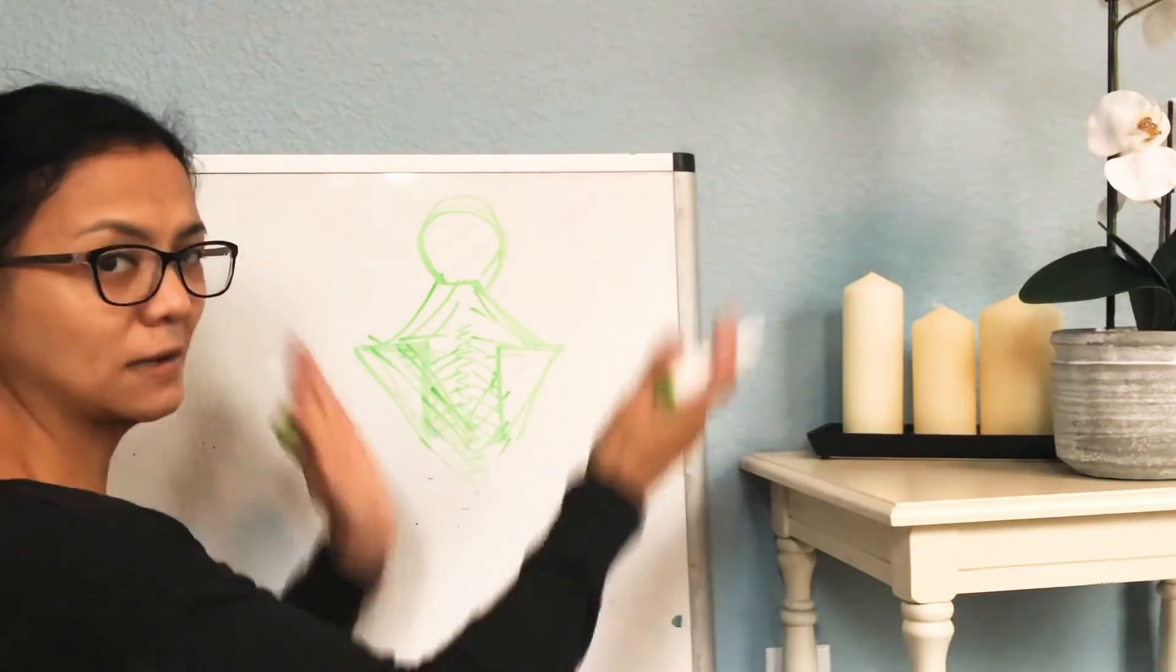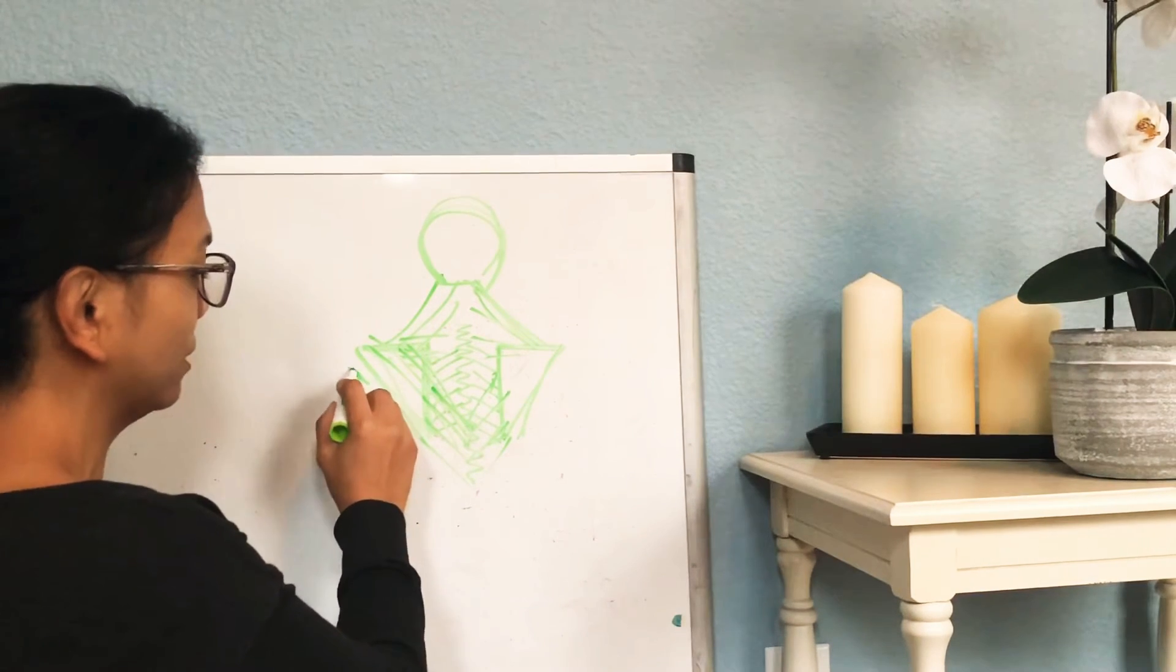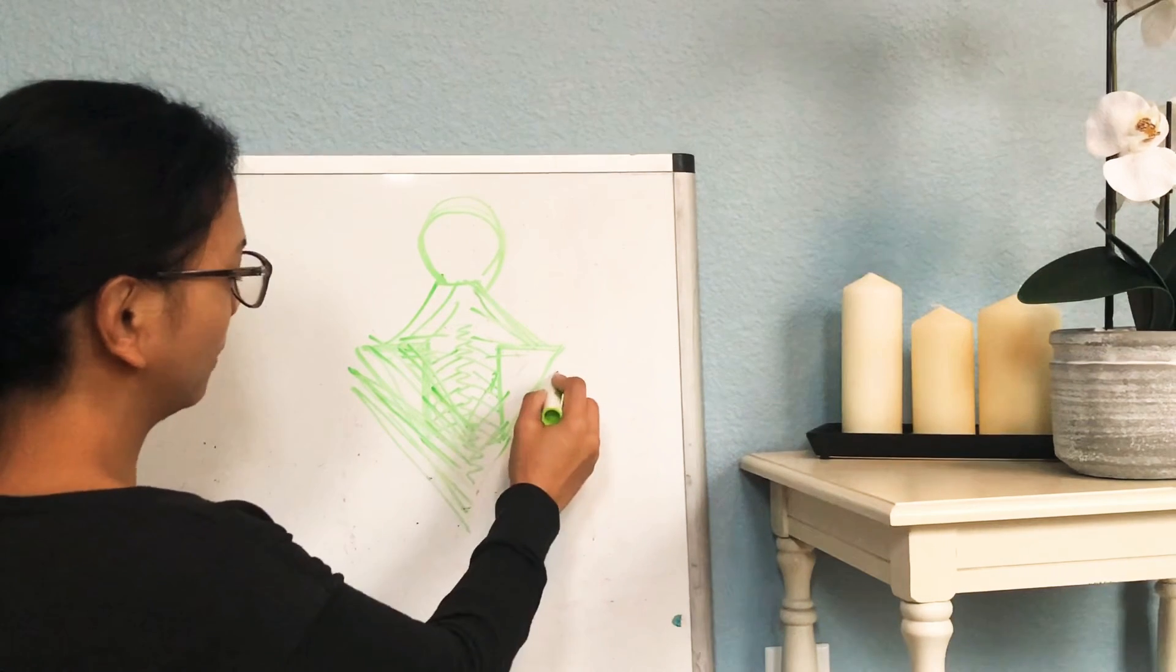The latissimus dorsi is that triangular muscle people work out. It's attached to your arm and down to your back.